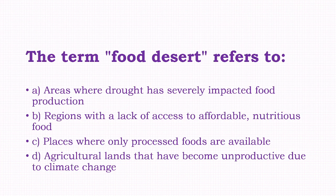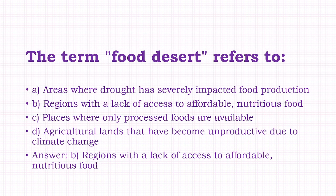The term food desert refers to: areas where drought has severely impacted food production, regions with a lack of access to affordable, nutritious food, places where only processed foods are available, agricultural lands that have become unproductive due to climate change. The answer is option B, that is regions with a lack of access to affordable, nutritious food.